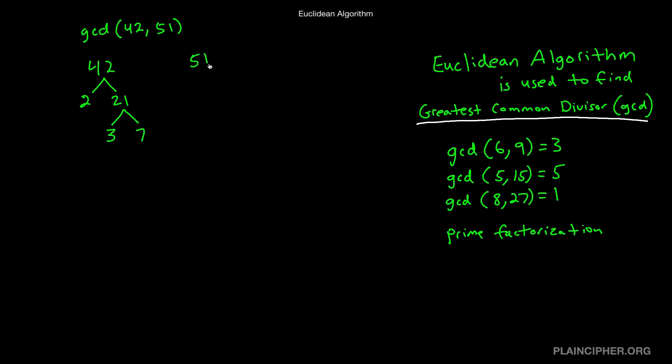And then you break 51 down to 3 and 17. And because the two 3s overlap here, this 3 and this 3 overlap, your GCD is 3. This is what you were probably taught to do in high school or junior high.